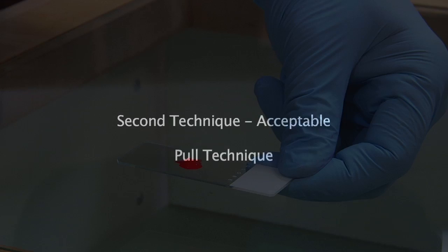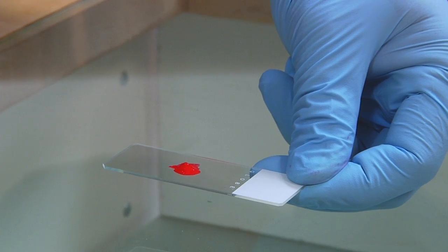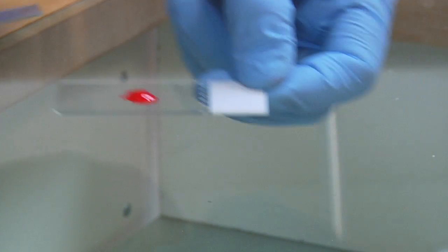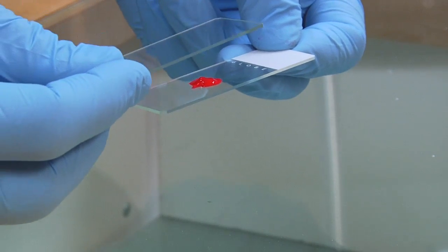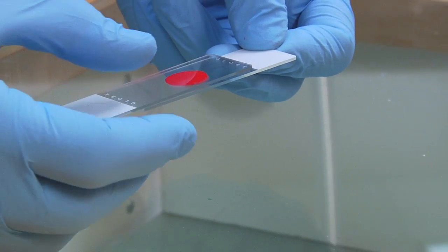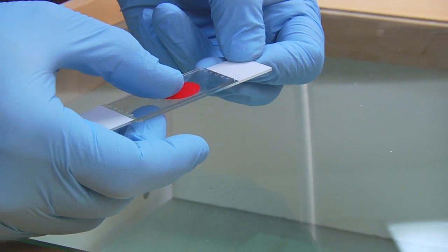The second technique of making slides is the pull technique. This works best for very bloody specimens. As you can see in this, the material is placed in the middle of the slide and the two slides that are going to be forming the smear are brought in contact with each other.